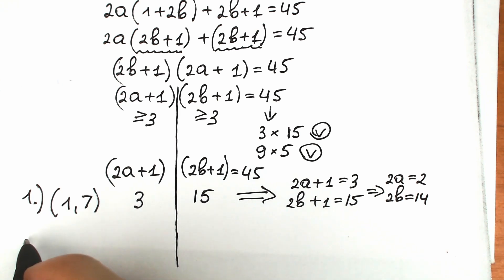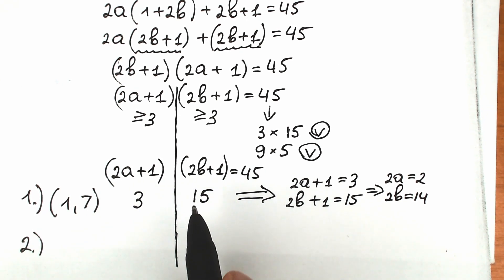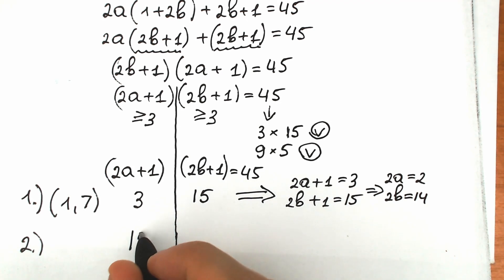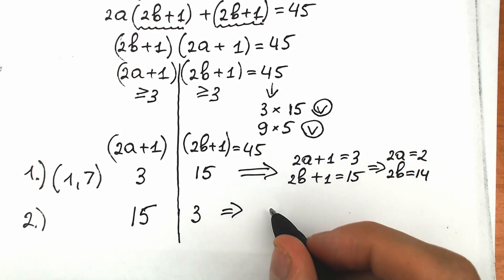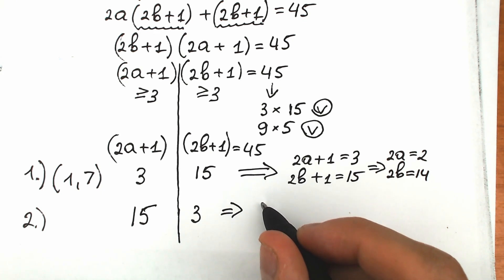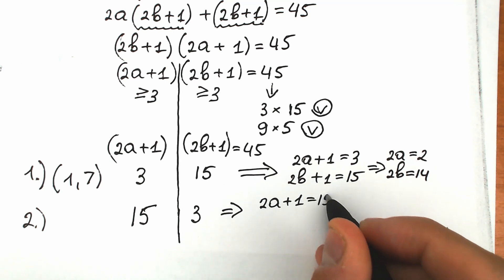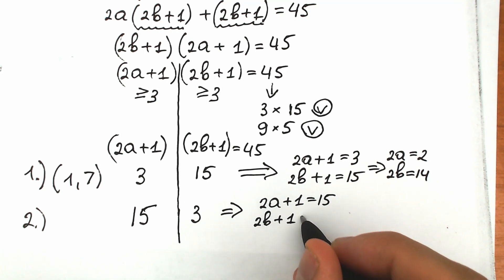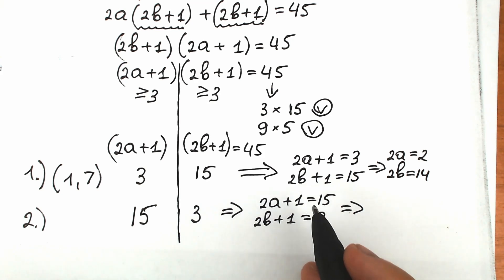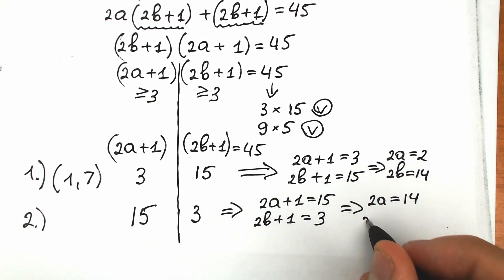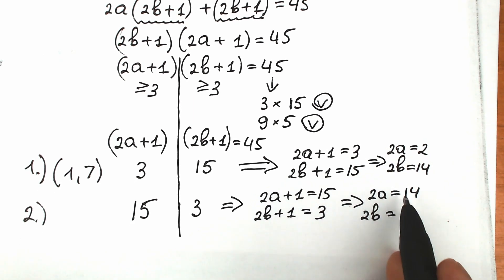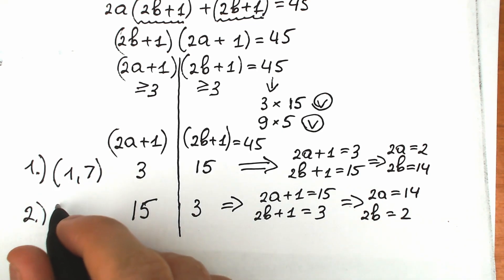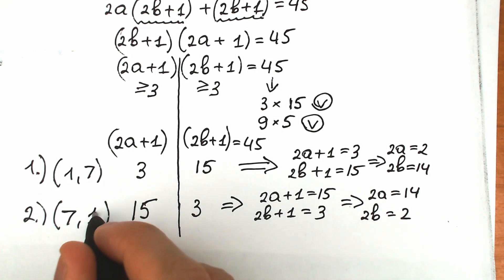For the second case, we can swap these elements since 15 times 3 also equals 45. So we set 2a plus 1 equal to 15 and 2b plus 1 equal to 3. This gives 2a equals 14, so a equals 7, and 2b equals 2, so b equals 1. Our second pair of solutions is a equals 7 and b equals 1.